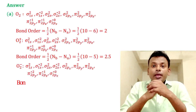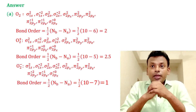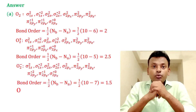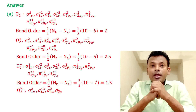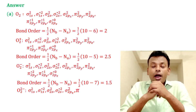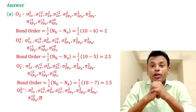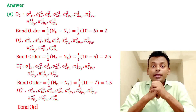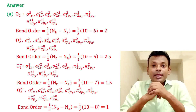For O₂⁻, bonding electrons equal 10 and anti-bonding electrons equal 7, so bond order equals 1.5. For O₂²⁻, the molecular orbital electronic configuration shows bonding electrons = 10 and anti-bonding electrons = 8, so bond order equals 1. So the increasing order of bond order is O₂²⁻ < O₂⁻ < O₂ < O₂⁺, and Option A is the correct answer.